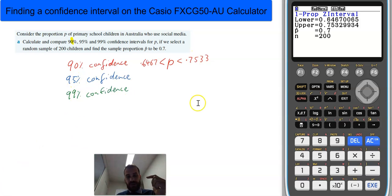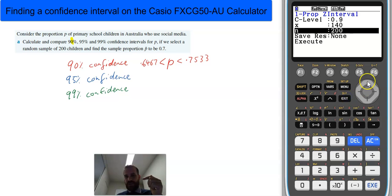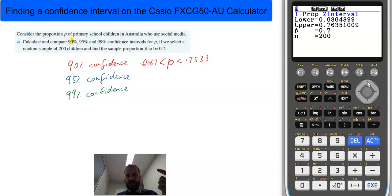I want to do the 95% and the 99% confidence intervals as well. So, if I go in here, I've got 0.95. The sample is still the same, and the proportion in the sample is still the same.